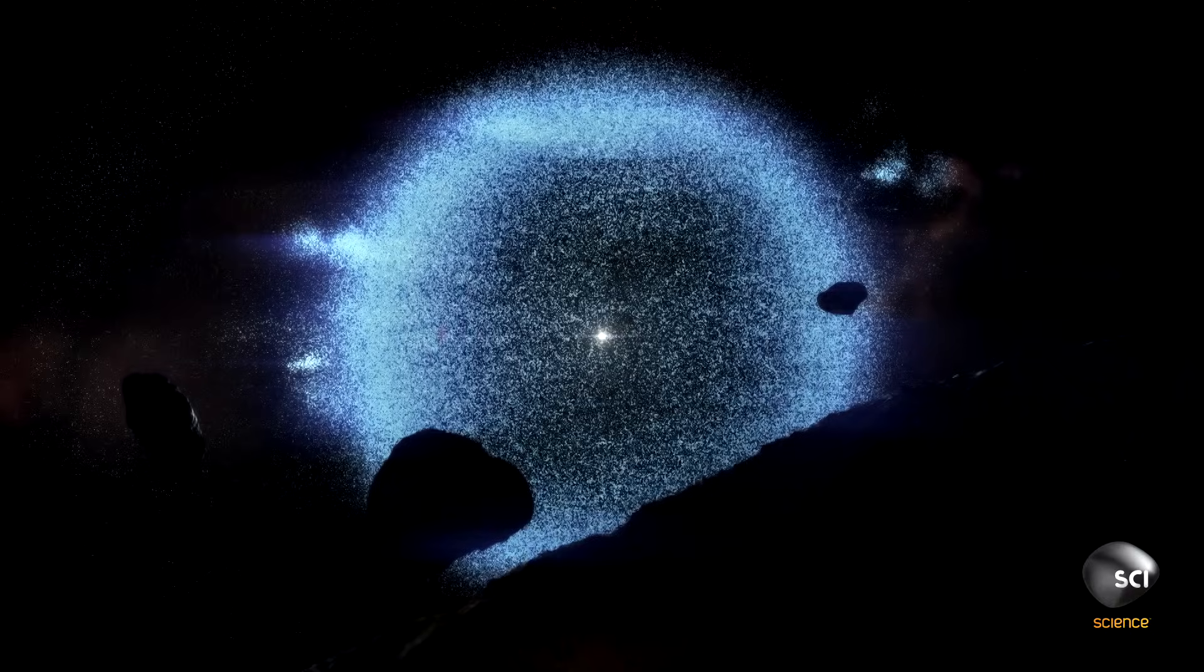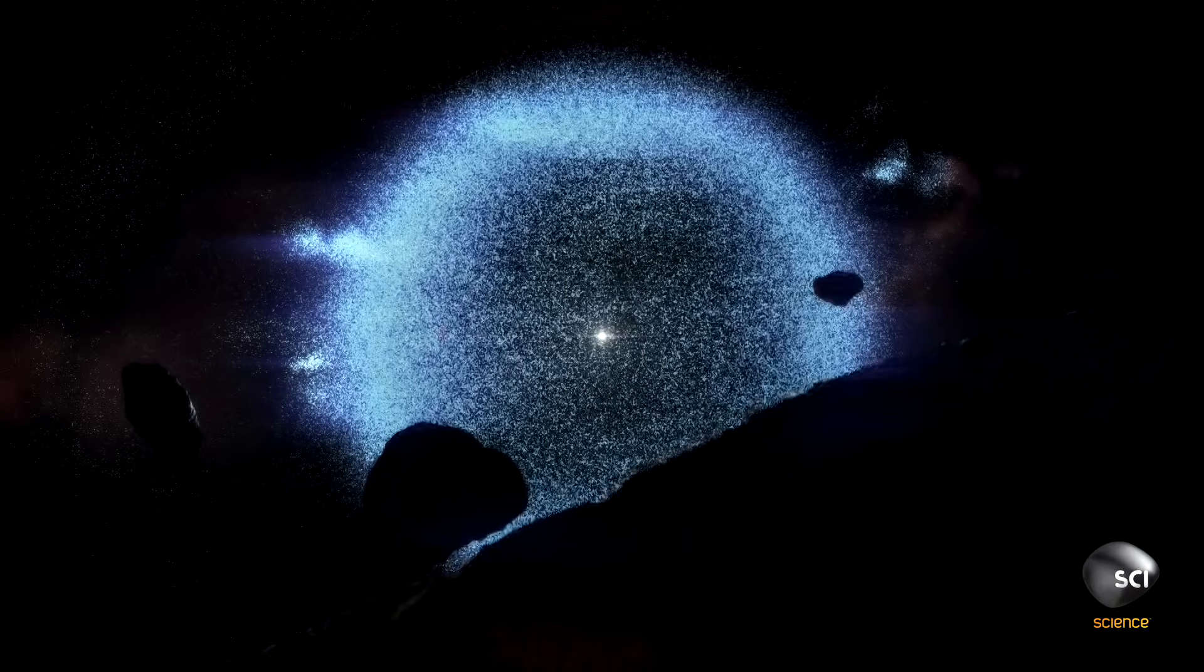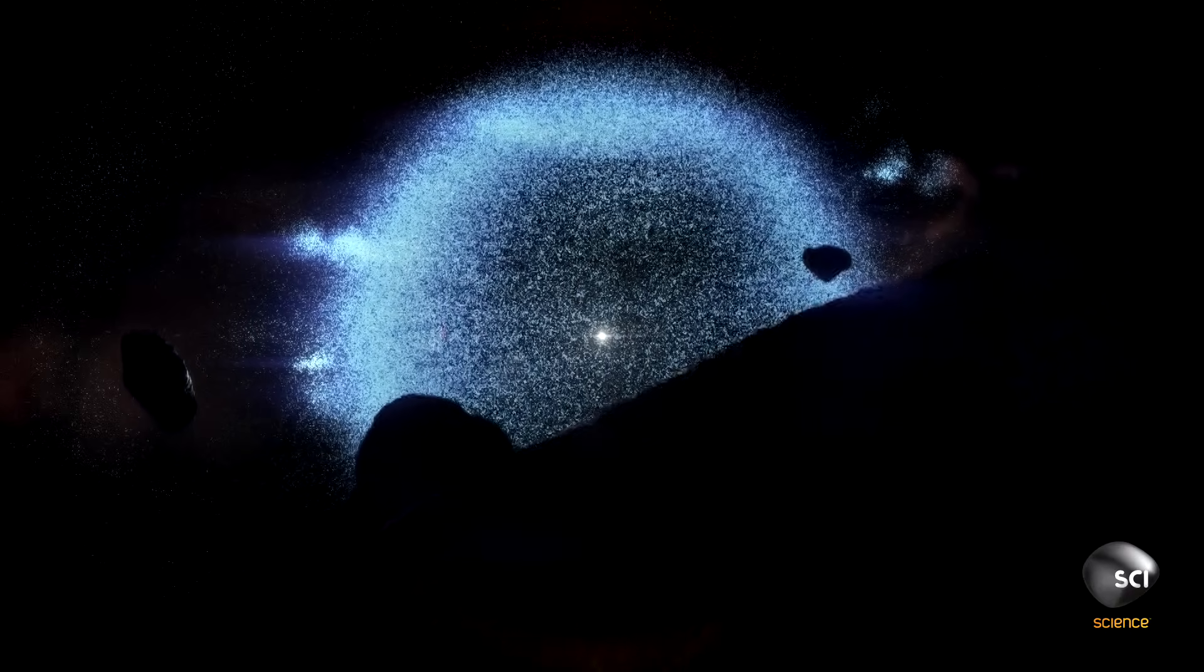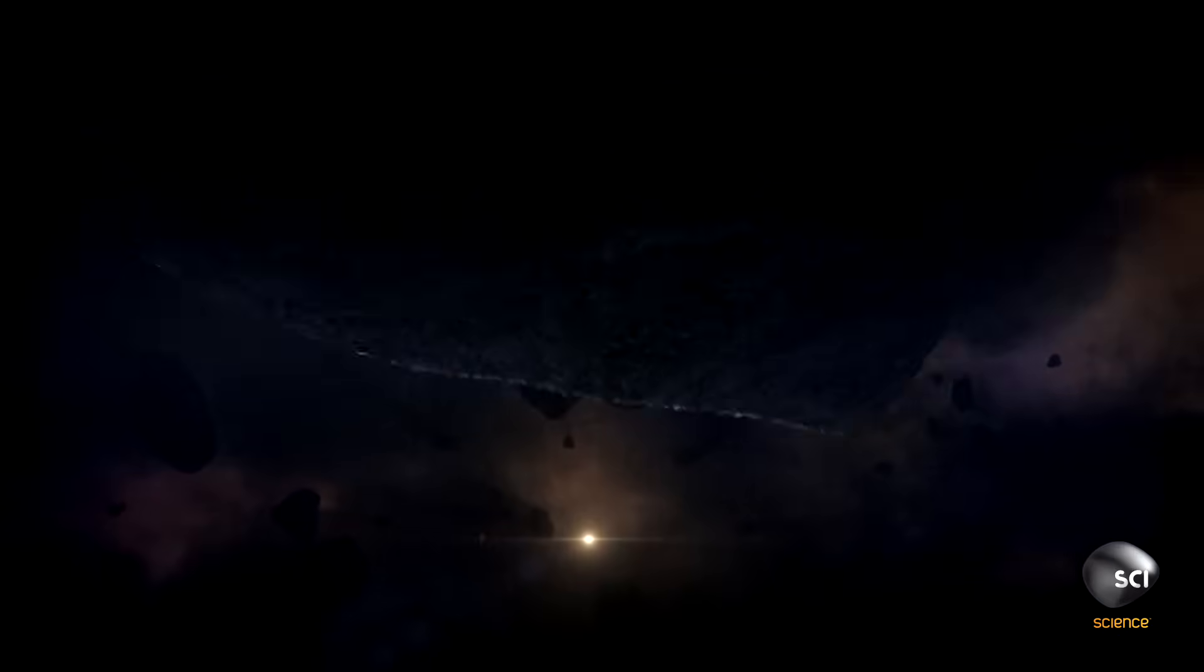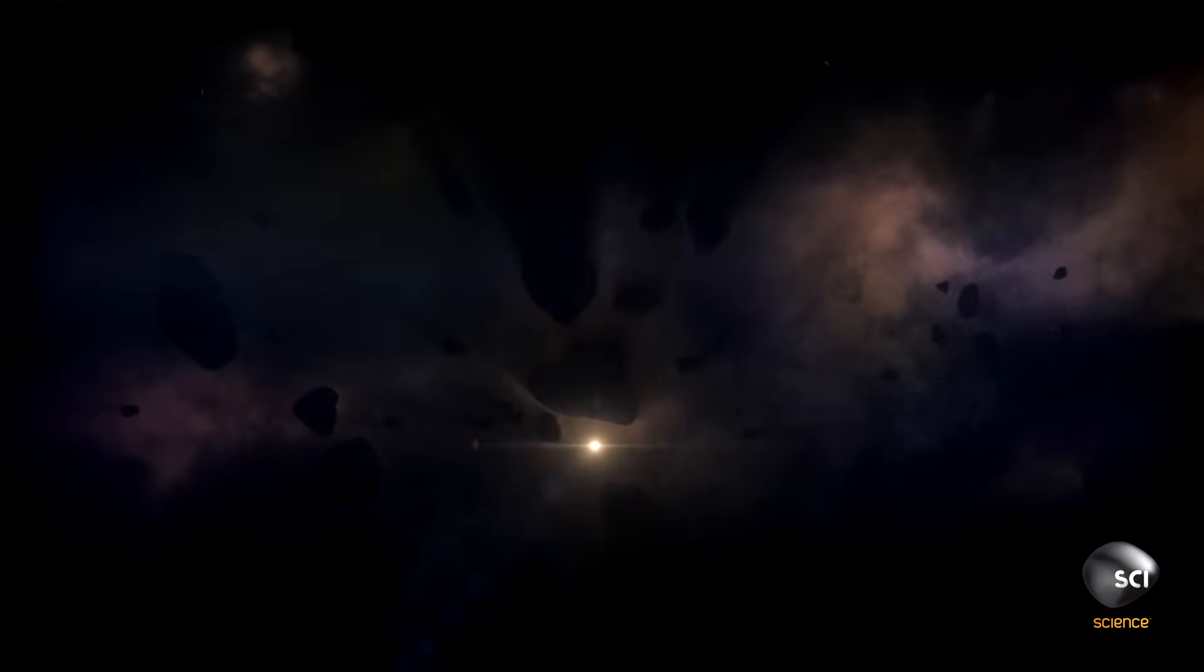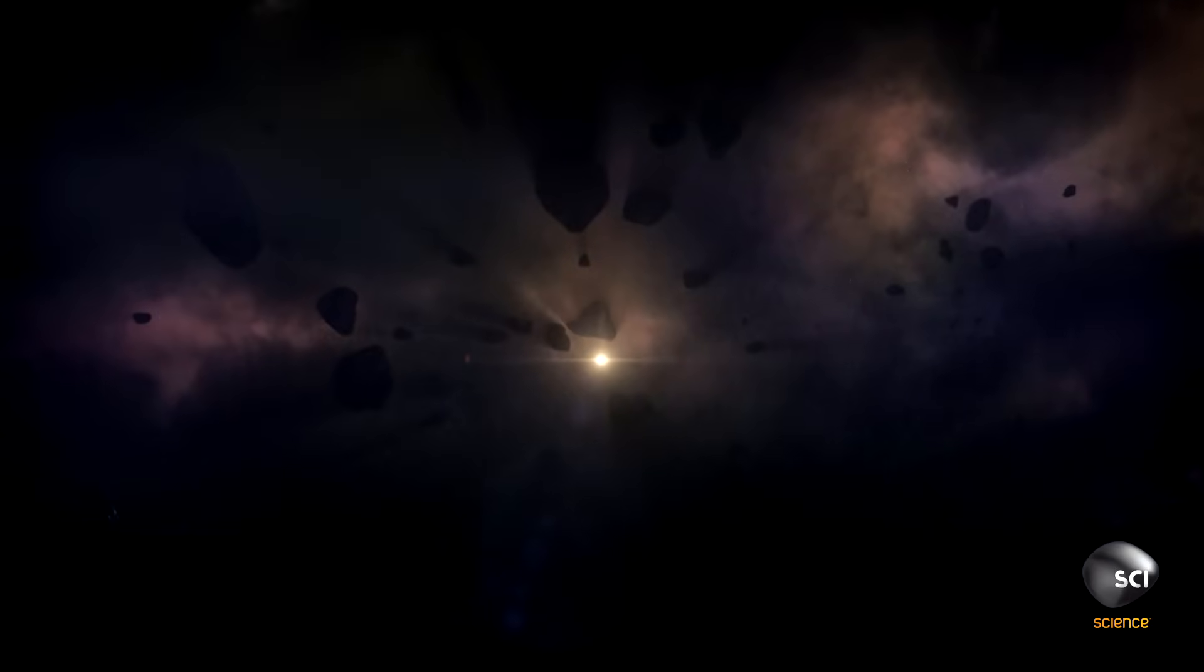The Oort cloud comets are dinosaur bones of solar system formation. Contained in them are the ingredients that went up to make our planets. Most of the Oort cloud objects will stay in this icy cloud forever, orbiting the distant Sun. But a few get nudged loose and the Sun's gravity pulls them inwards like moths to a flame.